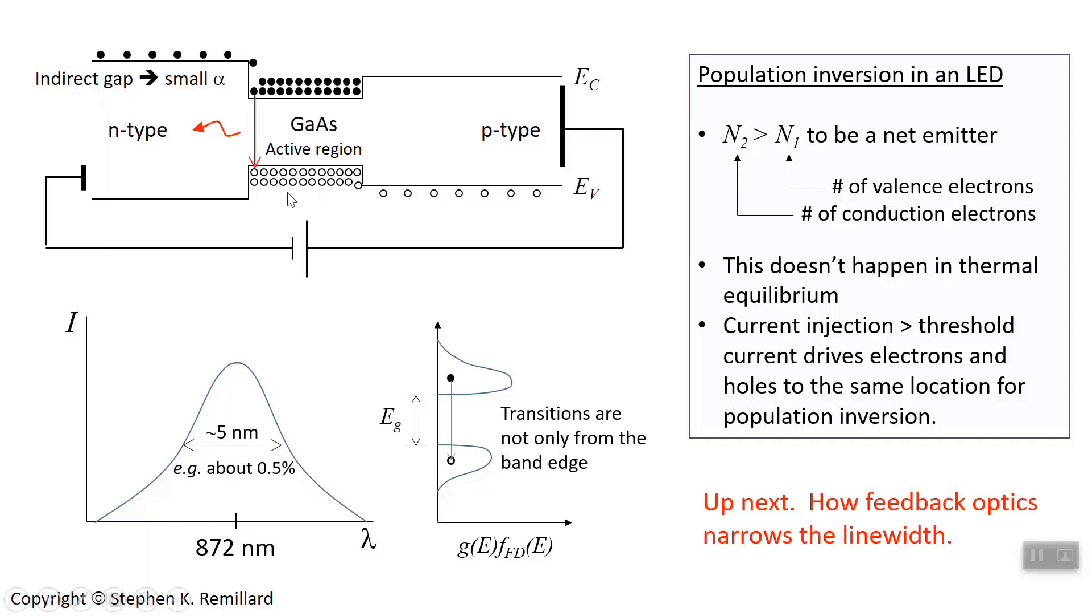But what you're looking at here is the spectral output of just the semiconducting dye. It's so wide because, I'll just remind you, the product of density of states and Fermi-Dirac distribution gives you the distribution of actual electrons and actual holes. So there's a variety of transition energies that can actually happen, not just from close to the gap edges. But there's a range. And we need to tighten that up. So what's coming up next is how feedback optics can be used to narrow the line width.